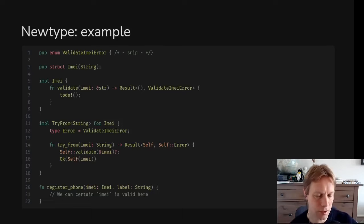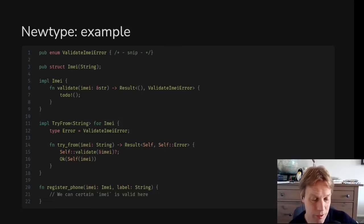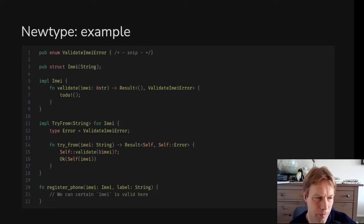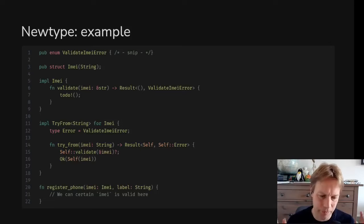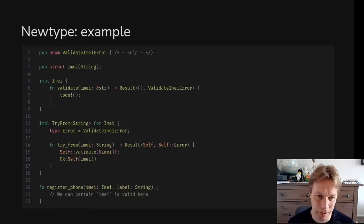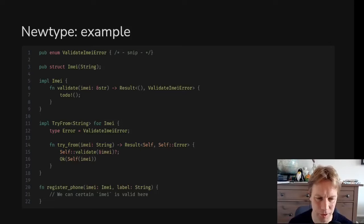An example of this that happens in normal Rust is that when you have a String, you know it's actually valid UTF-8, because the same kind of pattern is happening there. Underneath a string is just a contiguous chunk of bytes — U8s — but they've also been checked that they're valid UTF-8. So this IMEI is doing a similar pattern: it's checking it's a valid IMEI before it lets you create one.